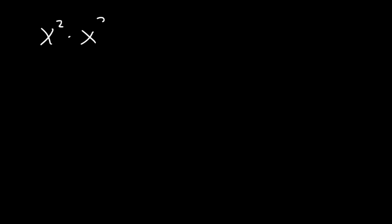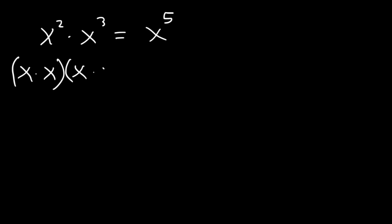Now let's understand some of these. Going back to the first one: why is x squared times x cubed equal to x to the fifth? Well, x squared really represents x times x — you're multiplying two x's together. x cubed is x times x times x. In total we have five x variables being multiplied together, so it's x to the fifth power.